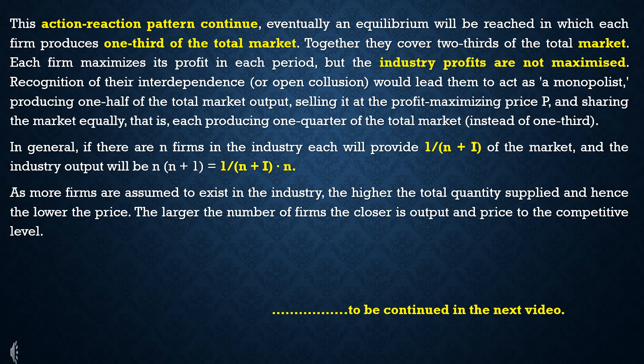The larger the number of firms, the higher the total quantity supplied and hence the lower the price of the commodity. As the number of firms increases, the model approaches the competitive level. Larger the number of firms, the closer output and price are to the competitive level.